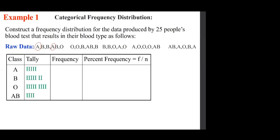Going back to the example, we tally all the A values — there are several A's here. You can cross them out and write the numbers. In front of A, counting gives one, two, three, four, five. You do the same thing for the rest of them and write the next column.